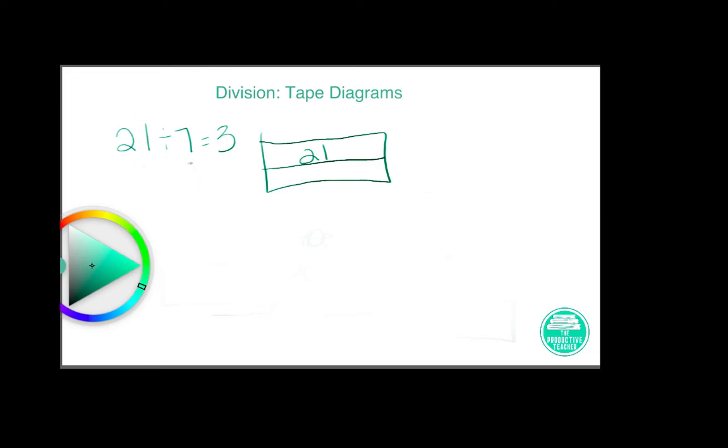So in the case of division, either the quotient or the divisor can be the number of boxes. In this case, because 3 is an easier number to draw, I'm going to say I have 3 boxes.